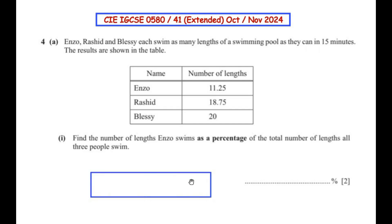Let us understand the meaning of lengths. If this is a swimming pool and Enzo, Rashid and Blessie are standing at one end, then from one end to the other is one length. Coming back is the second length, then length three, length four, length five and so on. So in 15 minutes these are the number of lengths swum by these three people.